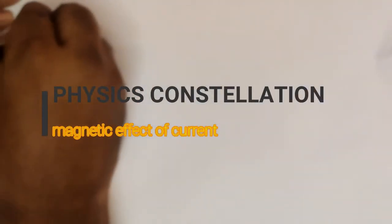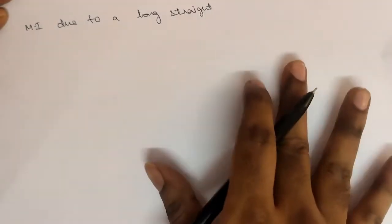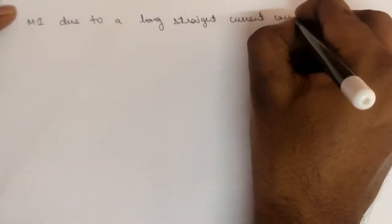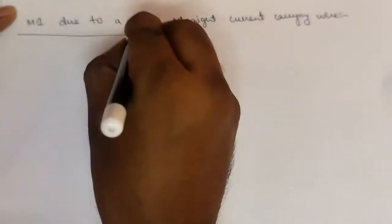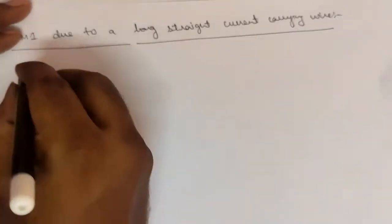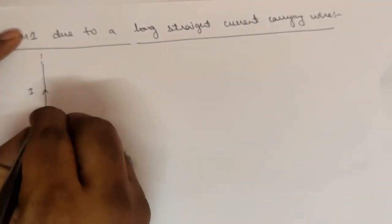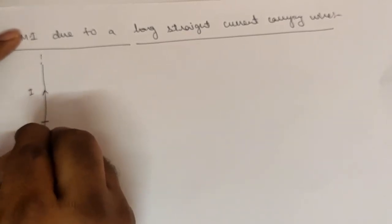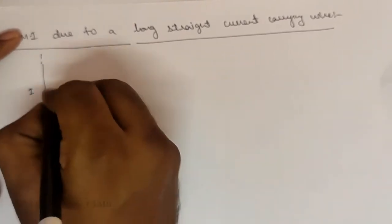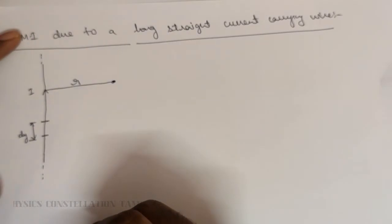Next, we are going to calculate magnetic induction due to a long straight current-carrying wire. So there is a long straight current-carrying wire — it is an infinite wire. Current I passes through it, and we are taking a small elemental length. The element length is dy, and we want to find the magnetic field at a point P at a distance r.